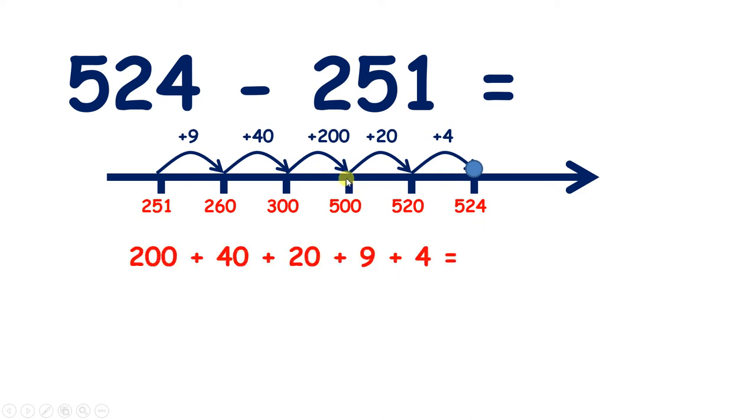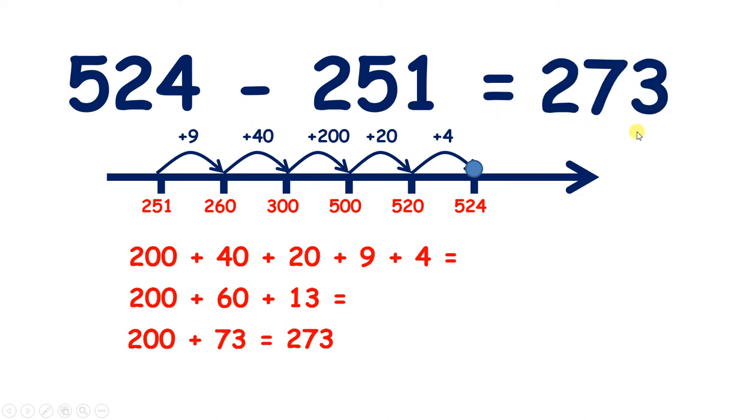So we added 200, 40, 20, 9, and 4. So 40 plus 20 is 60, 9 plus 4 is 13. Now we can add 60 and 13 to make 73, and adding that to 200 gives us our answer 273. So 524 minus 251 equals 273.